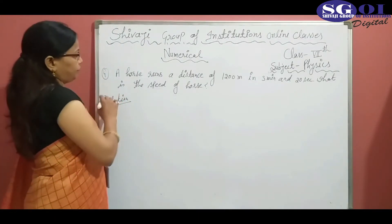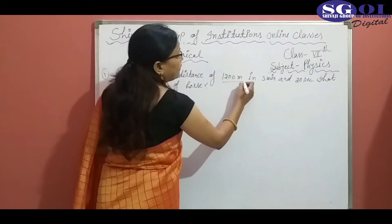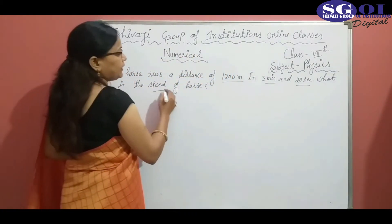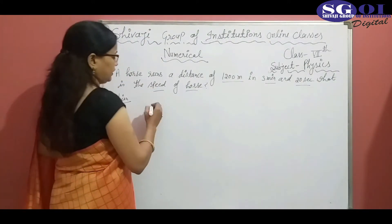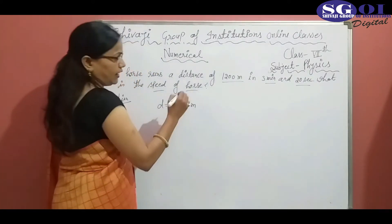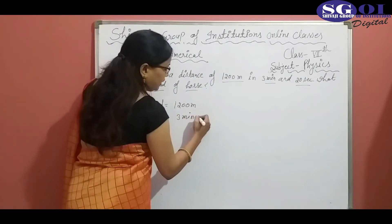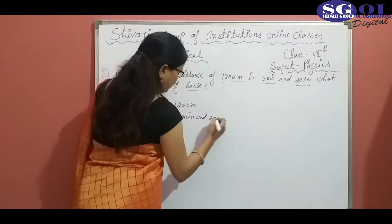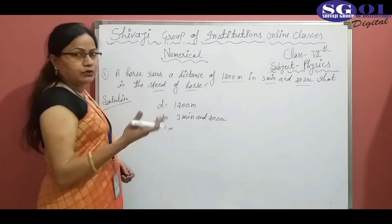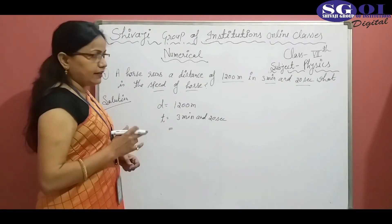Numerical number 4: a horse runs a distance of 1200 meter in 3 minutes 20 seconds. What is the speed of the horse? In this question, distance is 1200 meter and time is 3 minutes and 20 seconds. Firstly, we will convert 3 minutes into seconds, because the unit of speed is meter per second in the SI system.